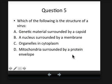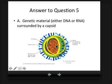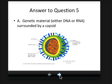Question five: which of the following is the structure of a virus? Genetic material surrounded by a capsid, a nucleus surrounded by a membrane, organelles in a cytoplasm, or mitochondria surrounded by a protein envelope? The answer is genetic material — either DNA or RNA — surrounded by a capsid. Here we have DNA surrounded by a capsid, and it can also be surrounded by a protein envelope. You might want to see your virus handout or the virus PowerPoint for the structure, as there are several questions about structure on the test.